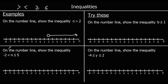The second one: on the number line, show the inequality. We've got n is bigger than negative 2 and less than or equal to 5. So we'll draw a circle at negative 2, and we'll draw a circle that we colour in at 5, because it can equal 5. We join these two up, which tells us n is between negative 2 and 5. If it was an integer, it could be negative 1, 0, 1, 2, 3, 4, and 5. It can't be negative 2 because there's no or-equals sign and it's not coloured in.